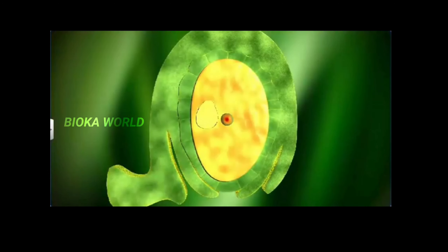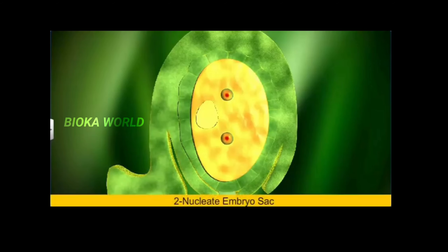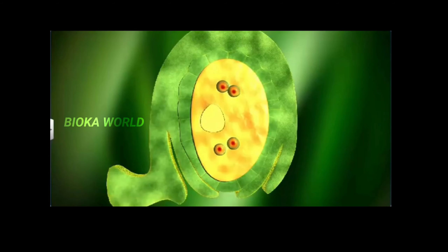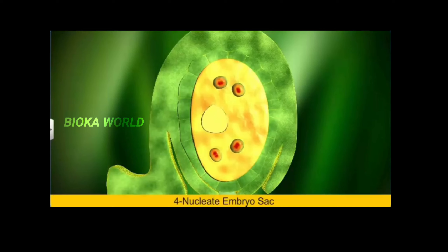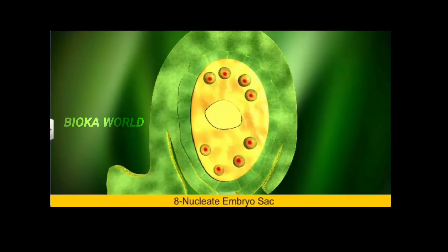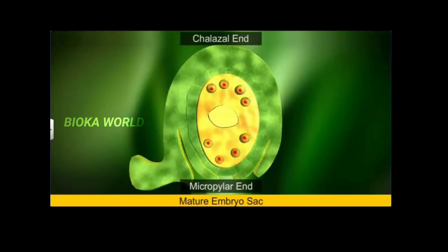While undergoing these mitotic divisions, the nucleus of the functional megaspore first divides to form two nuclei, which move to the two opposite ends of the embryo sac. This is the two-nucleate stage of the embryo sac. The mitotic divisions continue and result in the formation of the four-nucleate and later eight-nucleated stages. The mature embryo sac thus has eight nuclei after three mitotic divisions, which are arranged in a group of four at each end.